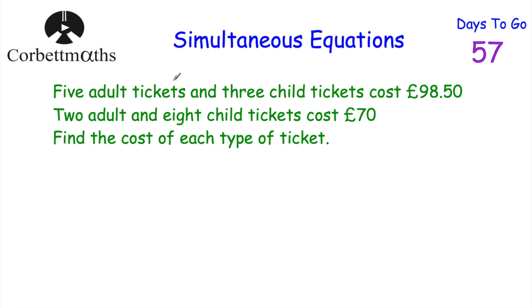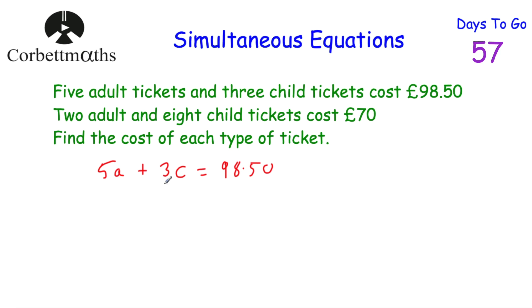Now let's have a look at a wordy question. 5 adult tickets and 3 child tickets cost £98.50. 2 adult tickets and 8 child tickets cost £70. Find the cost of each ticket type. Feel free to pause and try this yourself. To solve this, I'd start by making 2 equations. Let A = adult ticket price and C = child ticket price: equation 1 is 5A + 3C = 98.50, and equation 2 is 2A + 8C = 70.